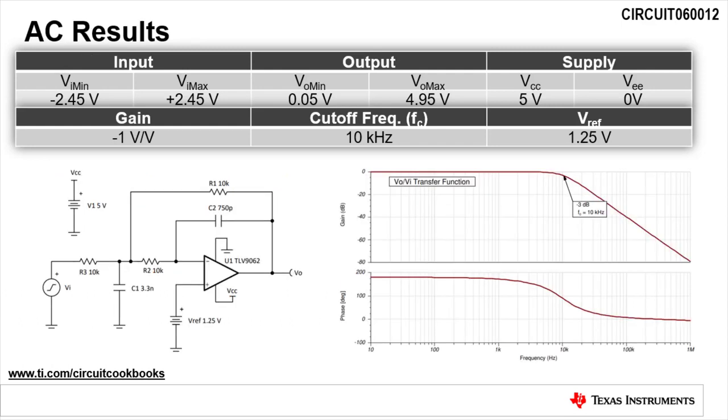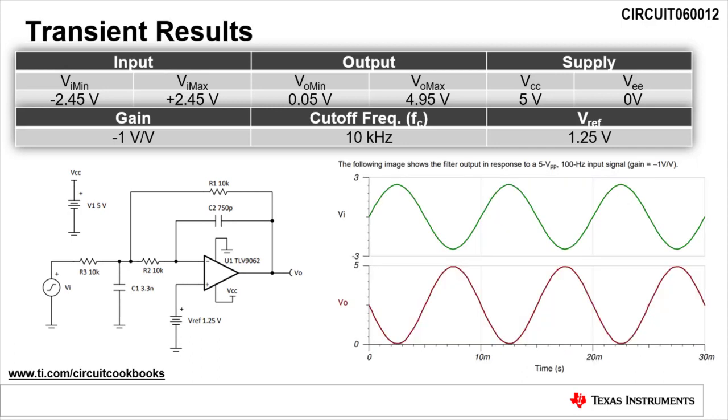Running an AC sweep analysis, we find the cutoff frequency is 10 kilohertz, as desired. Running a transient analysis at 100 hertz shows that the input signal passes without attenuation to the output. Notice that the output is centered around 2.5 volts, which is the amplified value of our reference voltage.